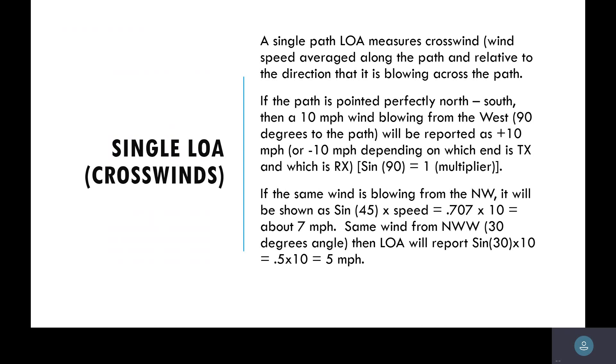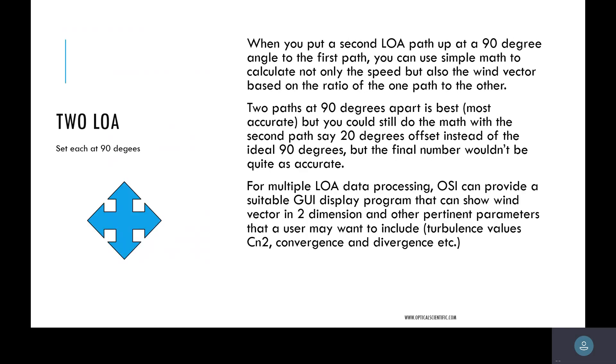If you set up two LOAs in an X pattern, it will give you both the X-axis and the Y-axis, so you can measure the magnitude and the wind direction of those vectors. When you do two LOAs, you can do it in a 90-degree angle. You can use simple math to calculate not only the speed but also the wind vector based on the ratio of one path to the other. Two paths at 90 degrees apart is best and most accurate.